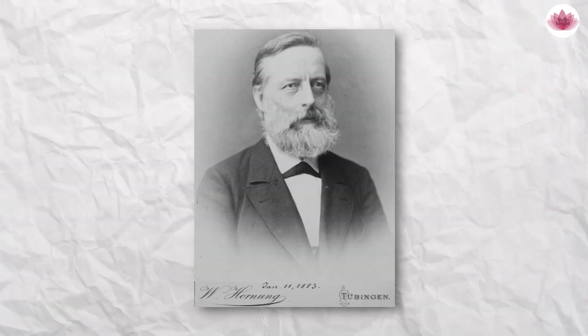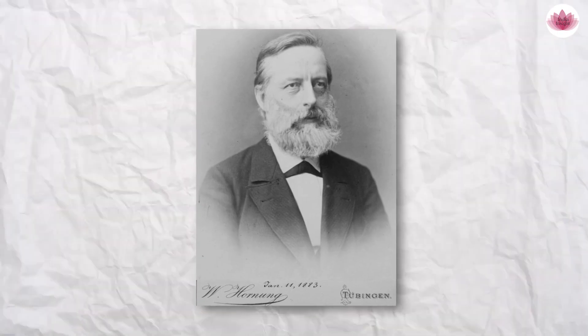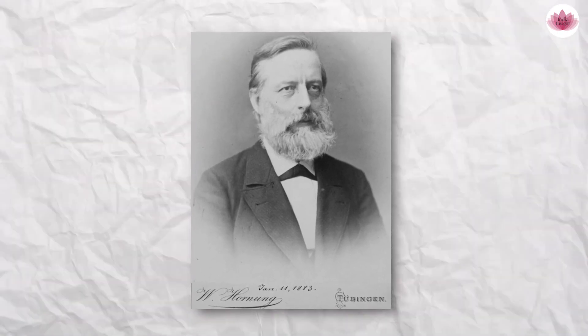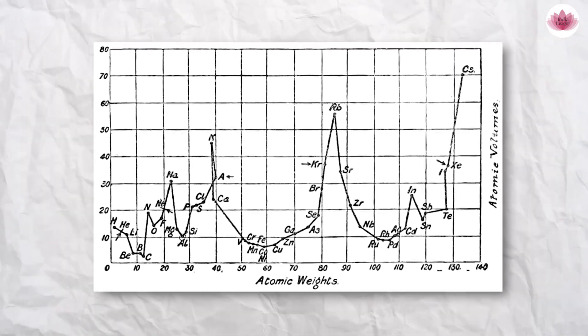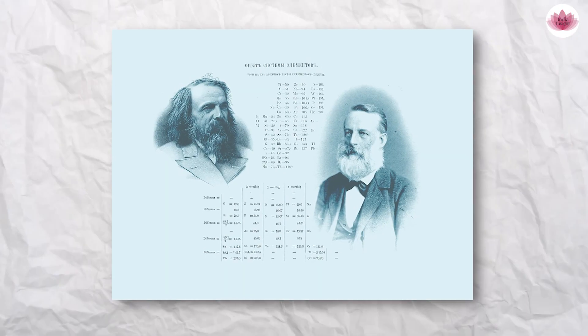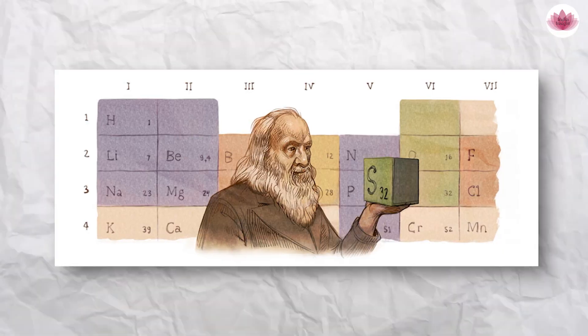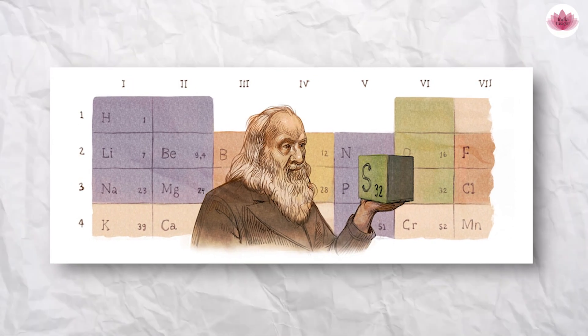Around the same time, German chemist Lothar Meyer also presented a concept of periodicity by plotting atomic volumes against atomic weight. Meyer and Mendeleev engaged in a prolonged dispute over who should be credited with the discovery of the periodic table. But what made Mendeleev win this dispute was his bold prediction of yet-unknown elements that secured his fame.